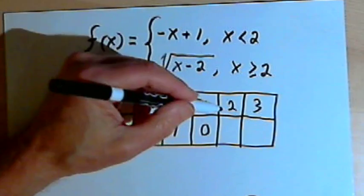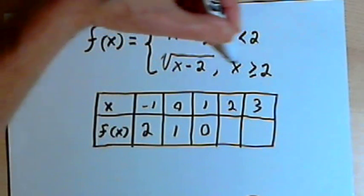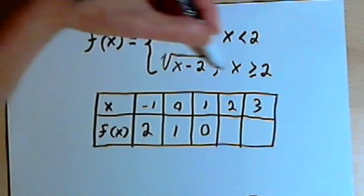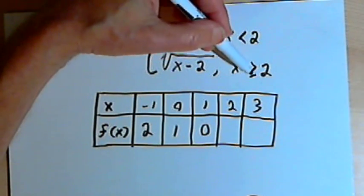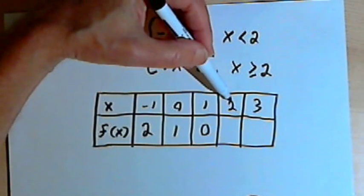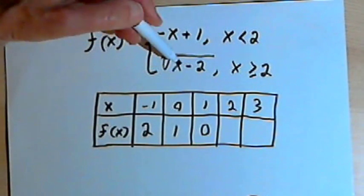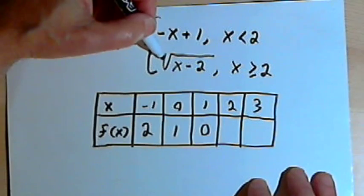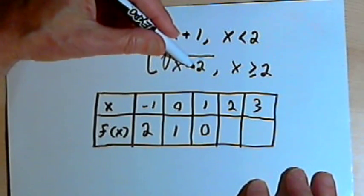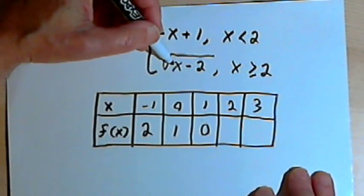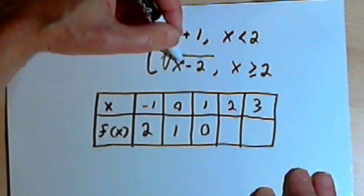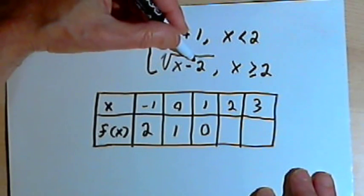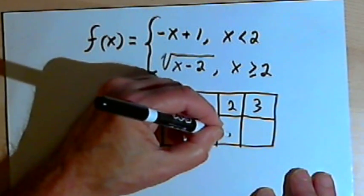Now when x is 2, I've got to go down to the second set of instructions, the second rule, because I use that whenever x is greater than or equal to 2, and my x is 2. So this tells me to plug the 2 into the square root of x minus 2. That's going to be the square root of 2 minus 2, which is 0. So the square root of 0 is 0.